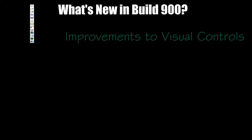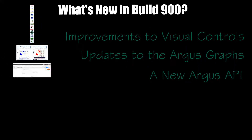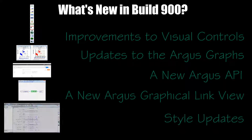Today we're going to be outlining what's new for Build 900. The areas we're going to cover today include improvements to the visual controls, updates to the Argus graphs, a new Argus API, a new graphical link view, and several style updates.